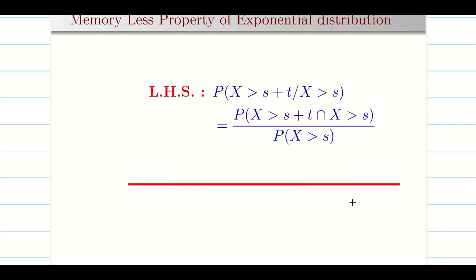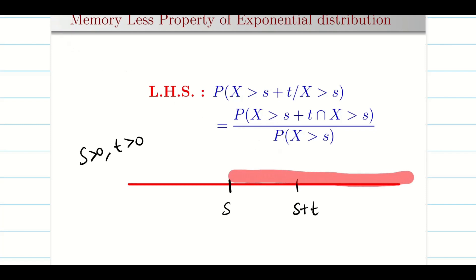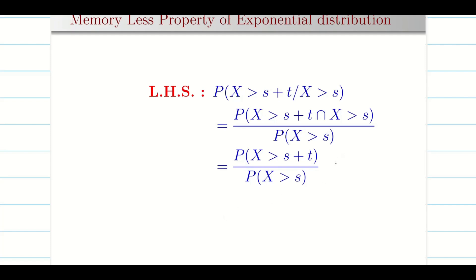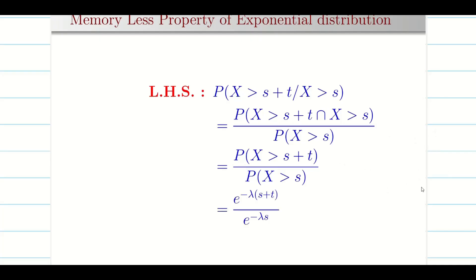To find the numerator, let us consider the point s here and the point s plus t here. Since s is greater than 0 and t is greater than 0, probability of x greater than s means the region goes from s, and probability of x greater than s plus t means it goes from s plus t. The region beyond s plus t is common to both. So the intersection is simply probability of x greater than s plus t. Using the result we just derived, the numerator is e^(minus lambda(s+t)) and the denominator is e^(minus lambda s). When we simplify this, the e^(minus lambda s) terms cancel, giving e^(minus lambda t).